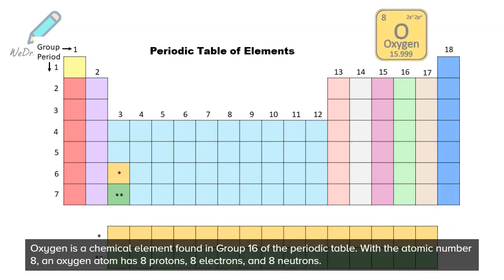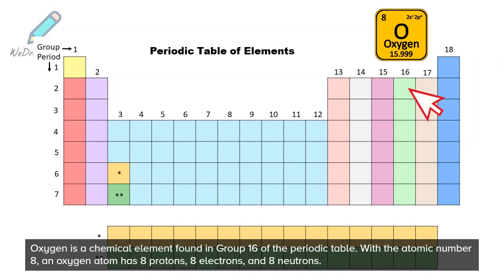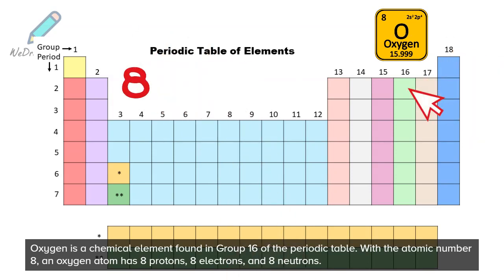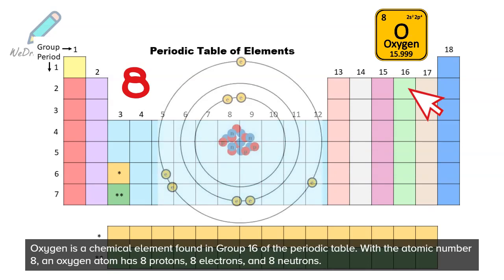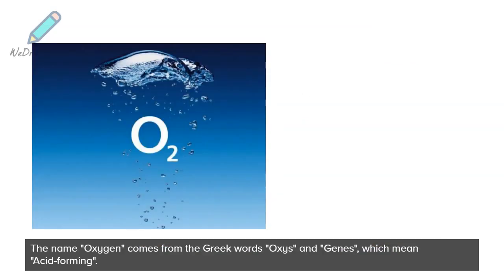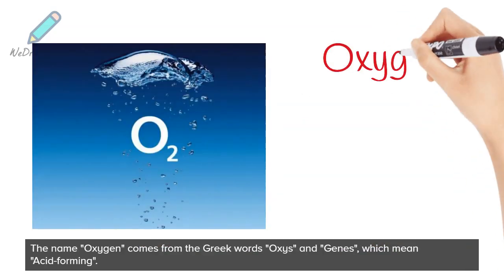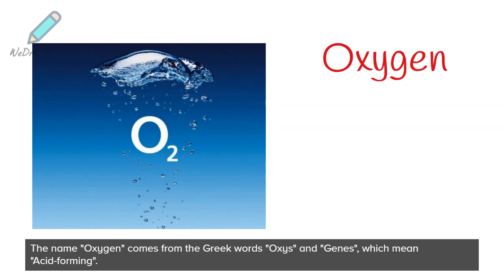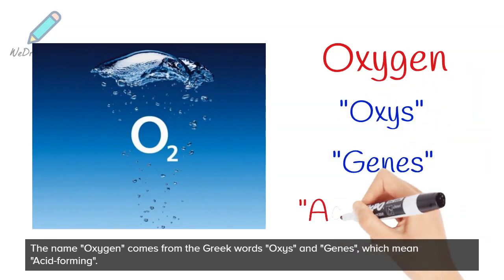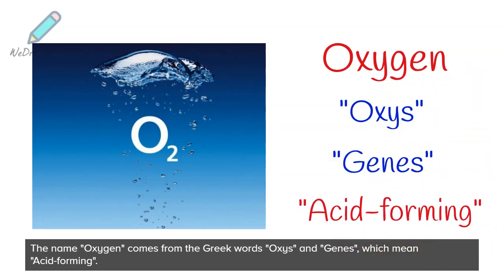Oxygen is a chemical element found in group 16 of the periodic table. With the atomic number 8, an oxygen atom has 8 protons, 8 electrons, and 8 neutrons. The name oxygen comes from the Greek words oxys and genes, which mean acid forming.